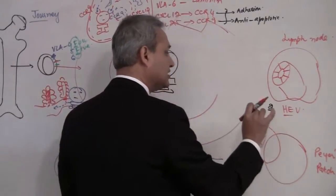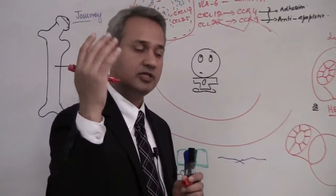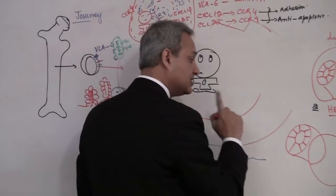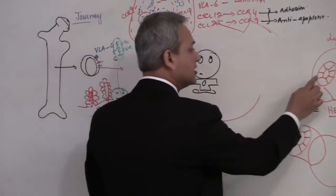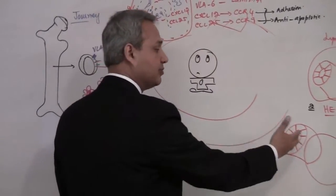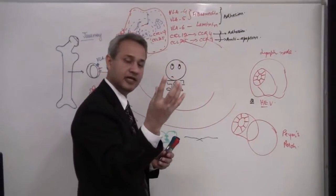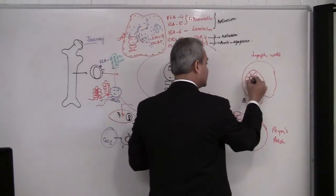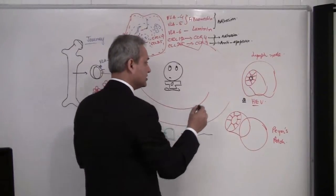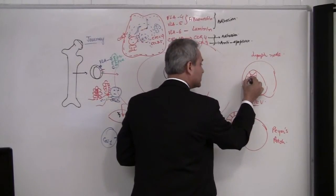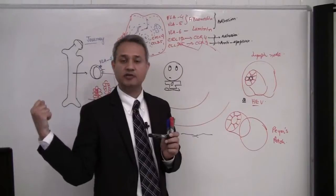These high endothelial venules are the route for naive T cells to enter lymph nodes or Peyer's patches. When a T cell reaches the lumen of these venules, the high endothelial venular cells express certain adhesion molecules which pick up a naive T cell and pull it into the lymph node.